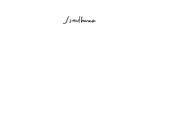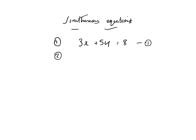We'll continue to look at some work on simultaneous equations, which we introduced in class late last week. Remember, it's two equations and two unknowns and we want to solve them to find x and y. Let's bring in something new: 3x plus 5y is equal to 8 — that's equation 1 — and x plus 7y is equal to 8 — that's equation 2.